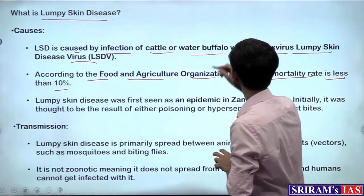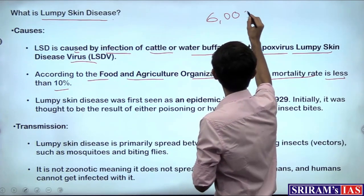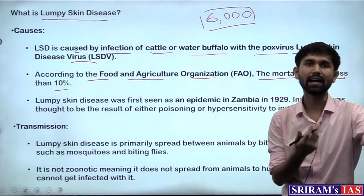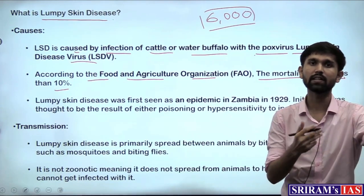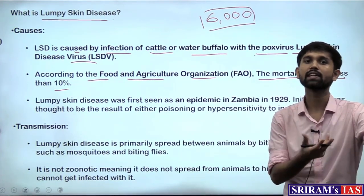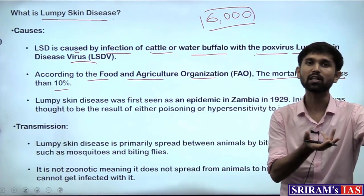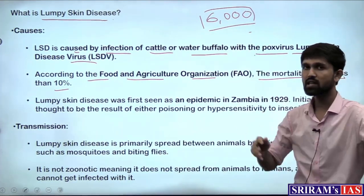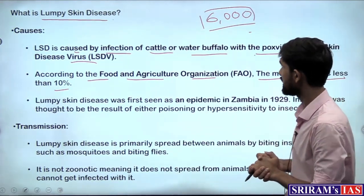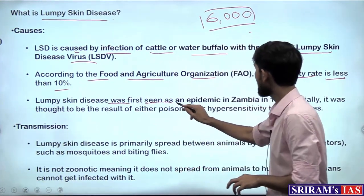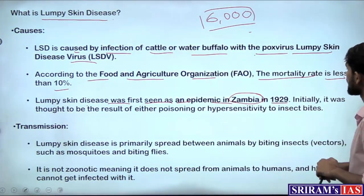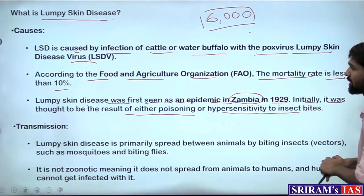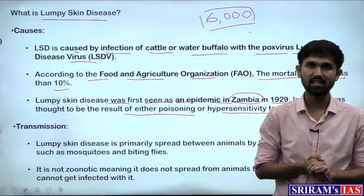Gujarat in the last few months saw the deaths of close to 6,000 cattle. These states are facing a lot of damage, and when cattle are dying and diseased, a lot of economic damage also takes place — milk production goes down and more money needs to be spent on recovery. This lumpy skin disease was first seen as an epidemic in Zambia, originating in Africa in 1929. Initially it was thought to be the result of poisoning or hypersensitivity to insect bites, but later it was found to be a viral infection.